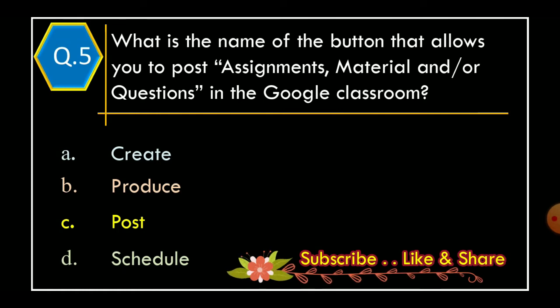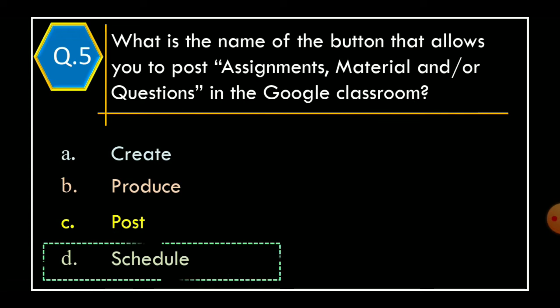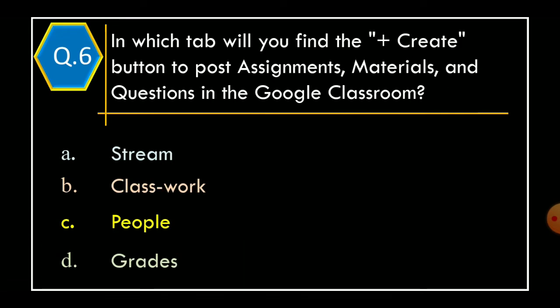Question 5: What is the name of the button that allows you to post assignments, material, and questions in the Google Classroom? Option A: Create, Option B: Produced, Option C: Post, Option D: Scheduled. And correct option is Option D: Scheduled.